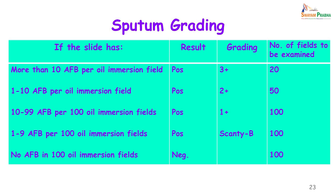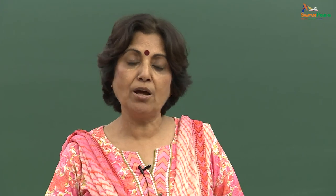The grading is as follows: more than 10 AFB per oil immersion field is 3+; 1 to 10 per oil immersion field is 2+; 10 to 99 per 100 fields is 1+; 1 to 9 per 100 fields is called scanty (with the exact number recorded); and no AFB in 100 fields is negative. If you are sincere, it takes approximately 20 minutes to scan one smear.